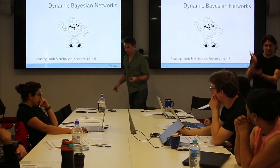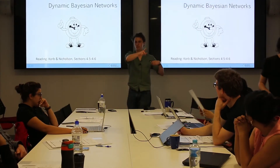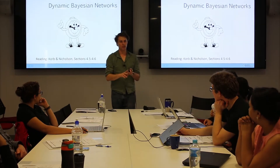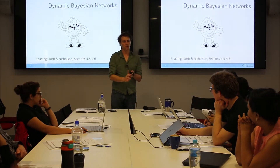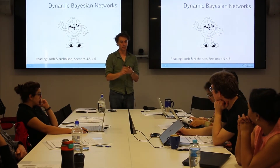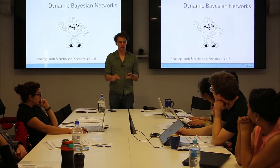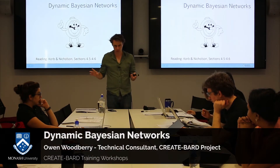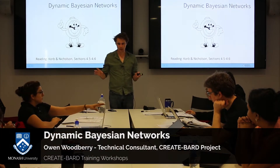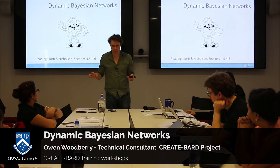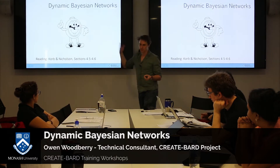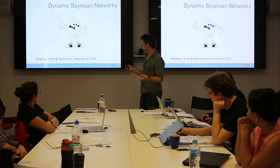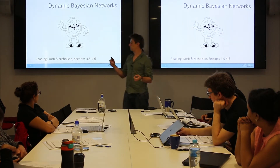Okay, so what we're going to talk about in the first part is dynamic Bayesian networks and then object-oriented Bayesian networks. I usually have about an hour and 45 minutes for this, but I've probably got an hour and a half or so now, which is fine — there's usually a bit too much time for this section anyway.